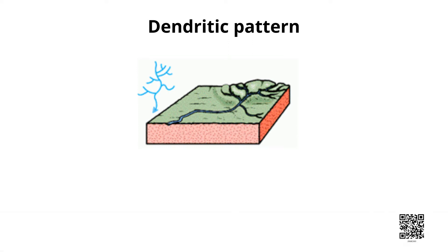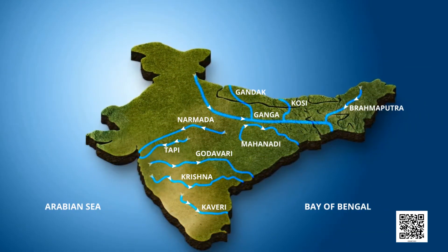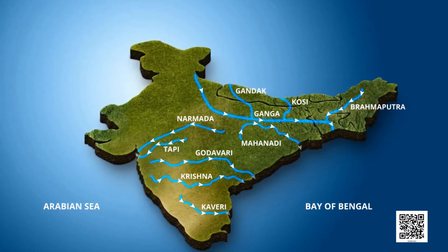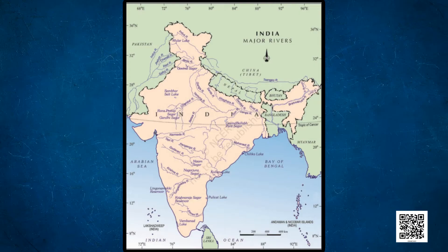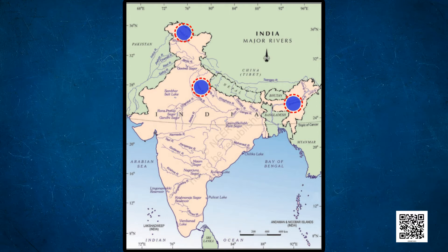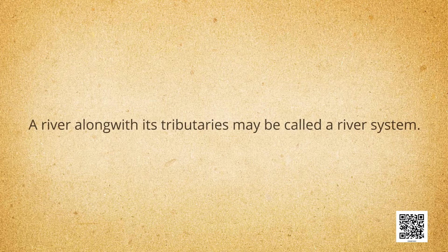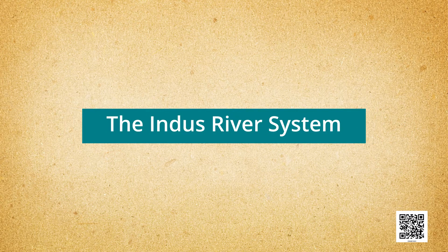A river joined by its tributaries — most rivers of Peninsular India originate in the Western Ghats and flow towards the Bay of Bengal. We will first talk about the Himalayan rivers. The major Himalayan rivers are the Indus, the Ganga, and the Brahmaputra. These rivers are long and joined by many large and important tributaries. A river along with its tributaries may be called a river system. The first is the Indus River System.